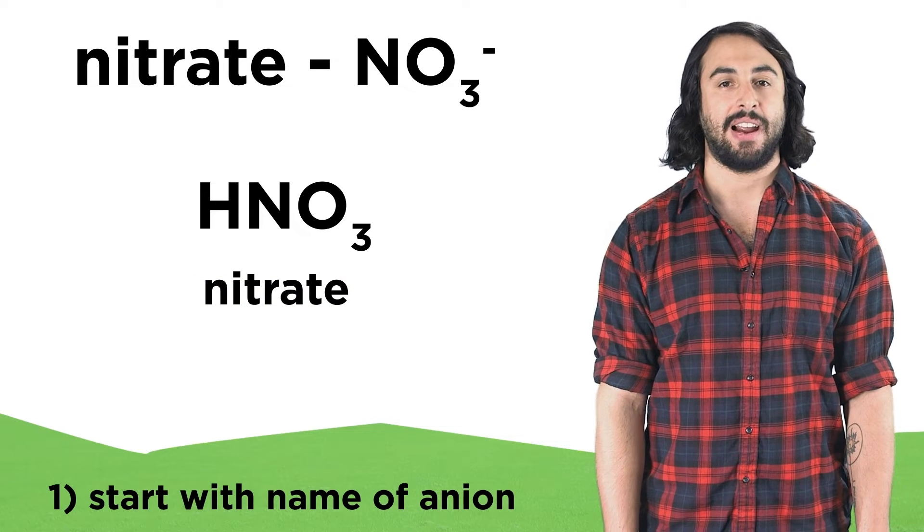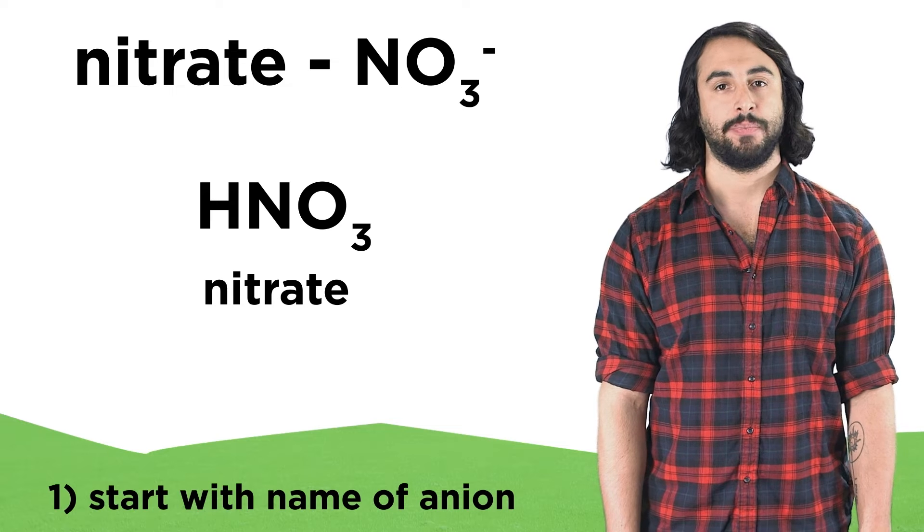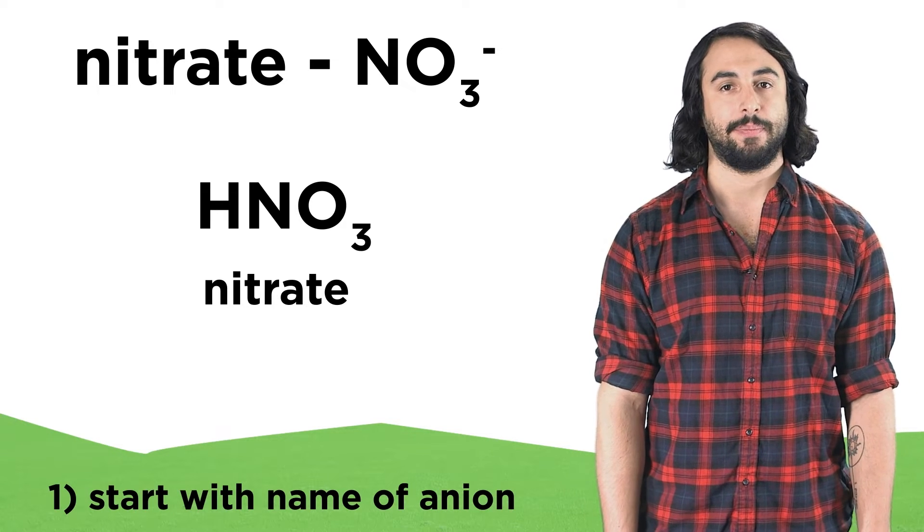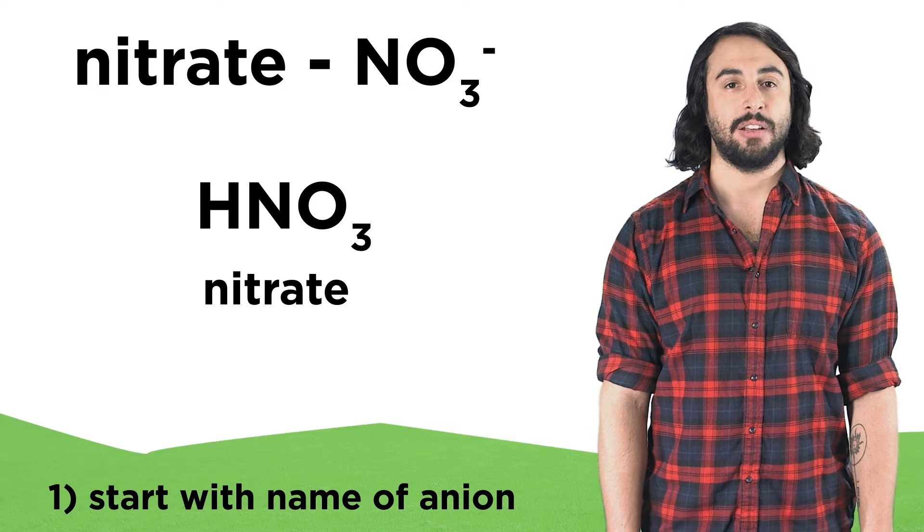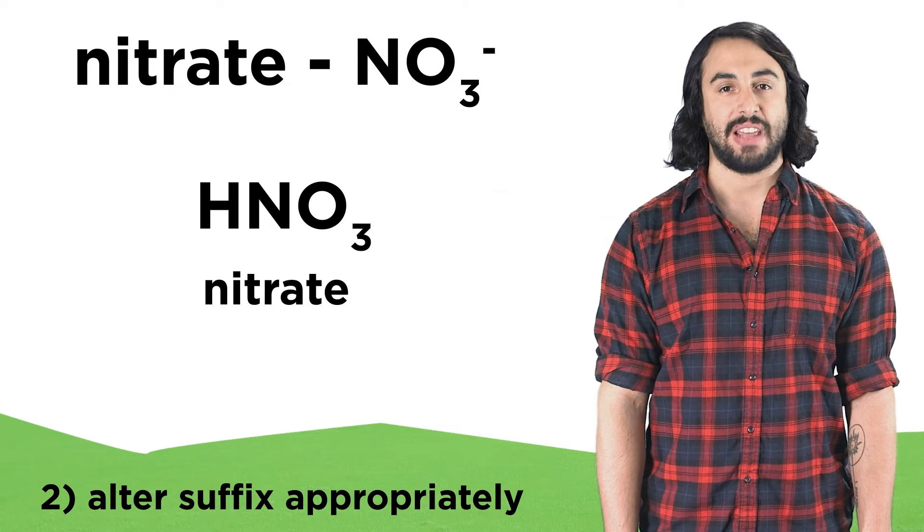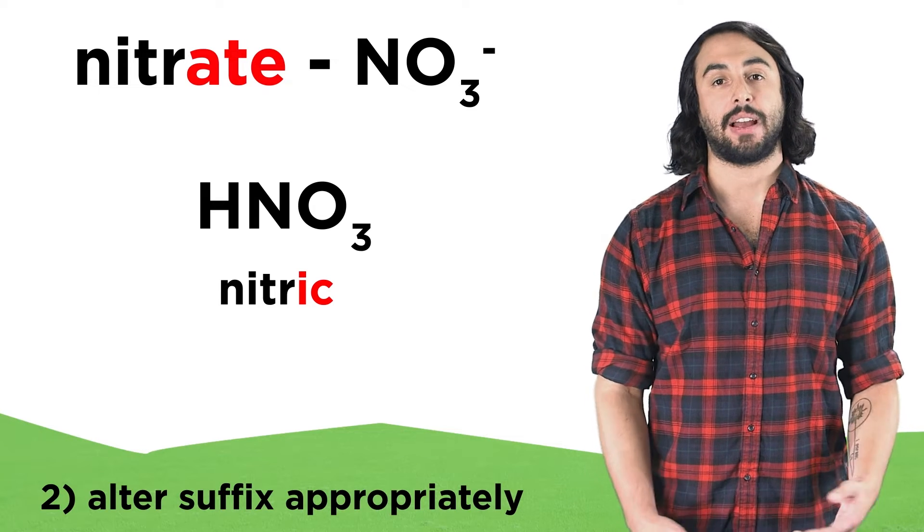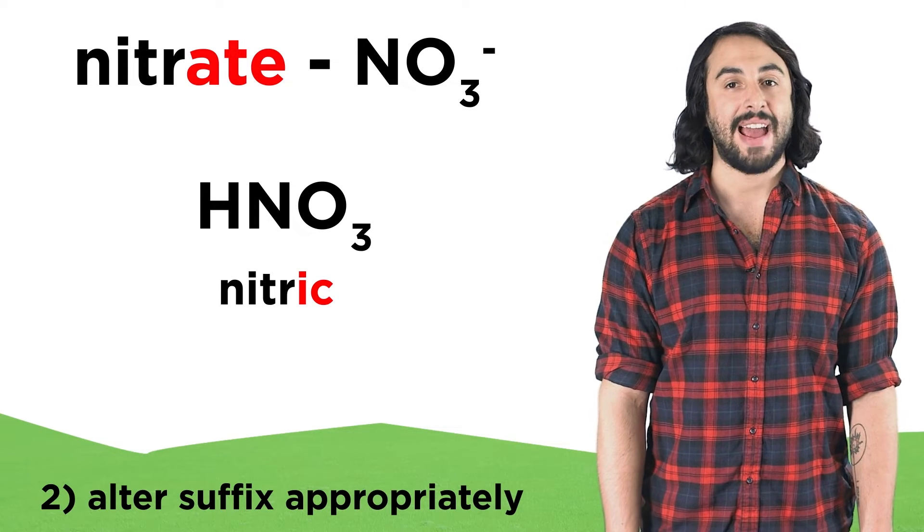First we begin with the name of the anion, in this case nitrate. So from this we could make sodium nitrate or potassium nitrate. But if this becomes an acid, we will change the suffix of the anion. If the suffix is "-ate", it will become "-ic", so this will become nitric.